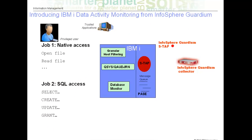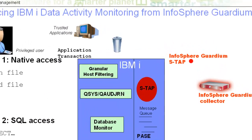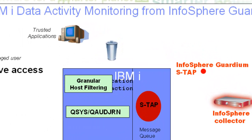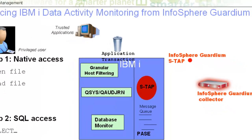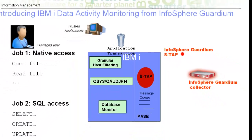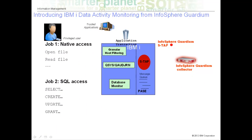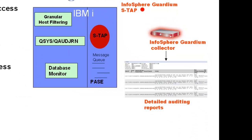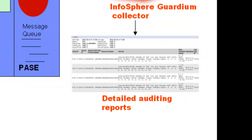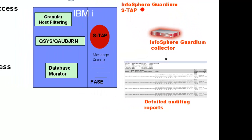You can filter the activity that is passed to the STAP. For example, you might want to audit just a group of privileged users, or you may want to avoid processing activity from trusted applications. The data in the appliance is available almost immediately for alerting, reporting, audit workflow processes, and archiving.